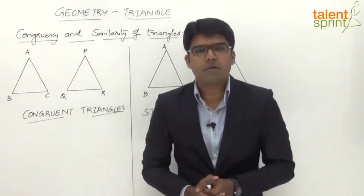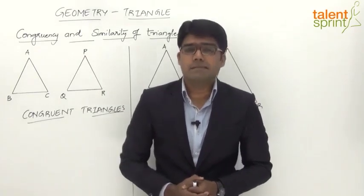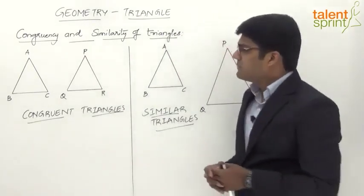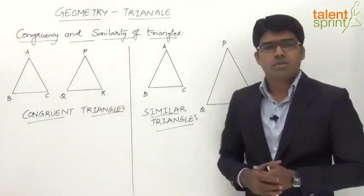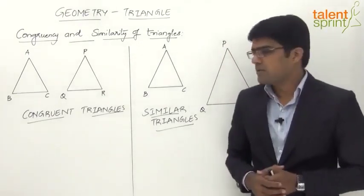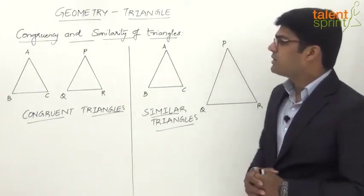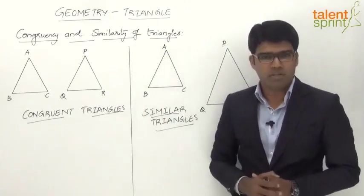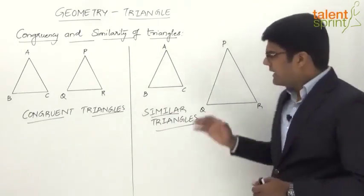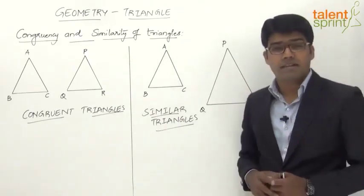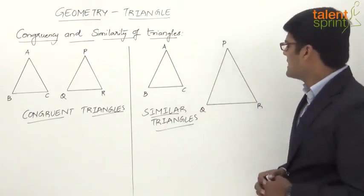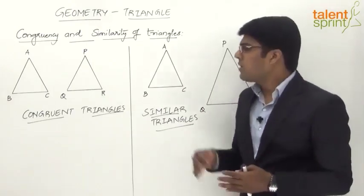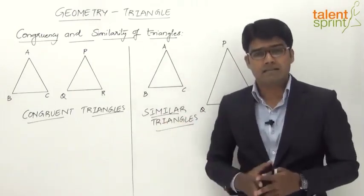Let us now learn about congruency and similarity of triangles. I shall explain this with the help of simple illustrations as shown on the board. On the left hand side we have two congruent triangles — triangles ABC and PQR — and on the right hand side are two similar triangles, also represented by ABC and PQR.